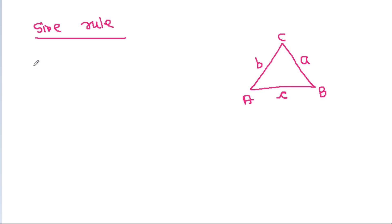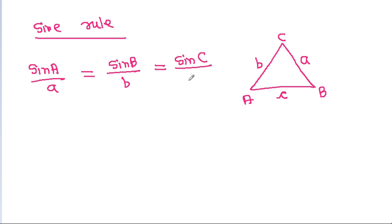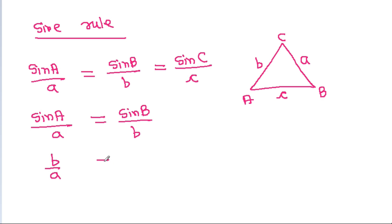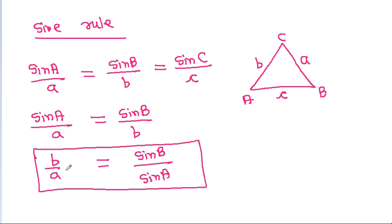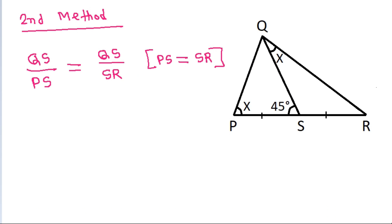According to the sine rule in any triangle with sides A, B, C and opposite angles, sin A by A equals sin B by B equals sin C by C. So B by A will be equal to sin B by sin A. That means the ratio of sides equals the ratio of the sines of their opposite angles. Here, one angle is 45 degrees.